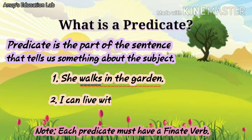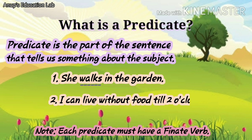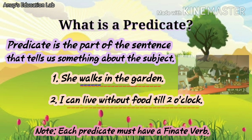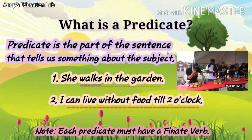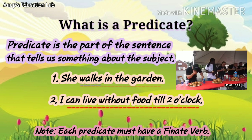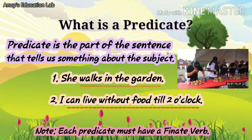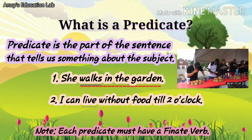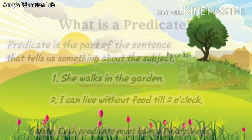I can live without food till two o'clock. Here, can live without food till two o'clock is the predicate because it describes the subject I. And live is the finite verb in this predicate.